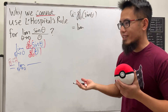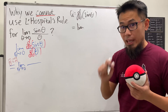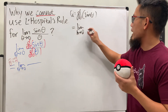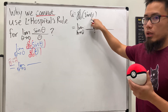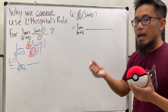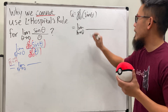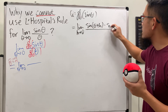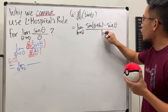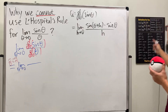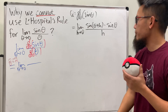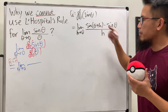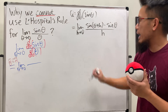By definition, the derivative of sine theta is a limit question: the limit as h approaching zero of sine(θ + h) minus sine(θ), all over h. This is the definition of the derivative. Now, in order to work this out, we will have to expand the sine(θ + h) term.